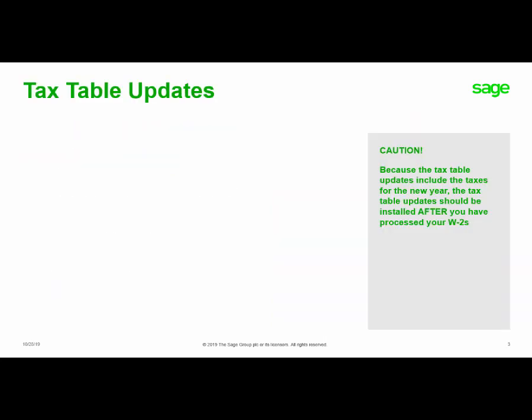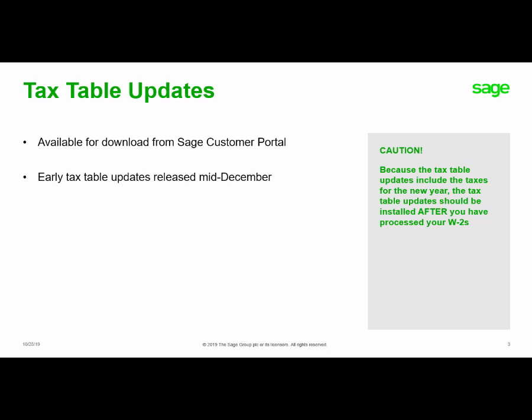Let's first discuss the tax table updates. Tax table updates are provided by Sage twice a year and will be available for download from the Sage customer portal. The early tax table update is released mid-December and a later tax table update in early to mid-February. The early tax tables will include federal and state income tax updates received by Sage prior to the deadline, and the late update will include the additional federal and state changes received by Sage.